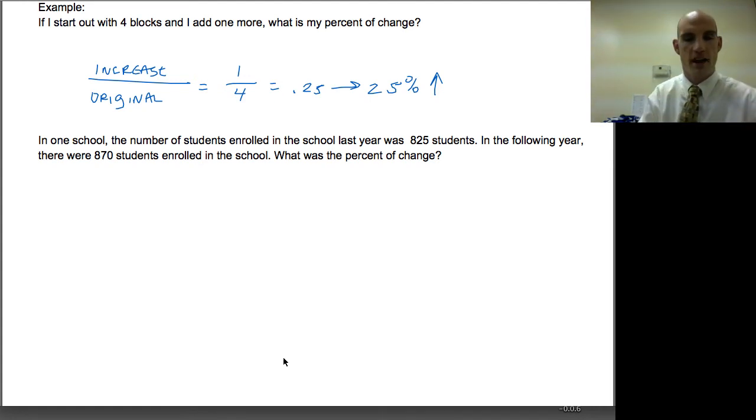I'm going to pull out a calculator here. Basically, we're going to find the change over the original. What did I start out with? My original amount was 825 students and the amount of change is what I ended up with minus the original amount. When I do that, I get 870 minus 825. I had an increase of 45 students.